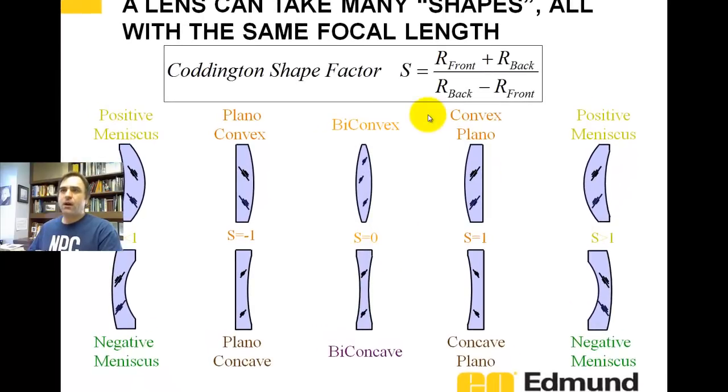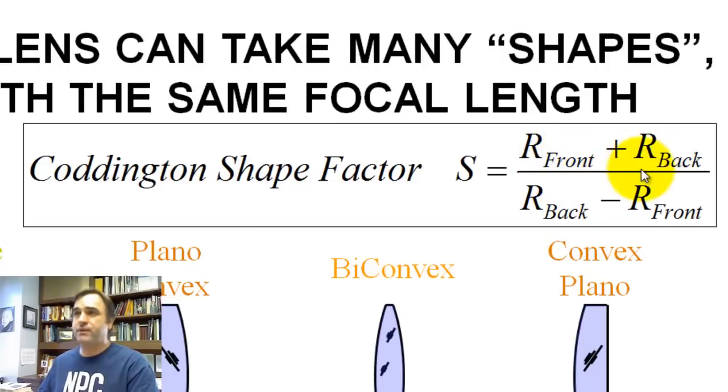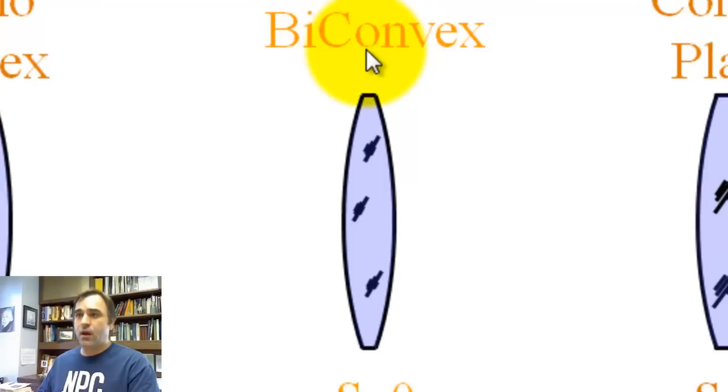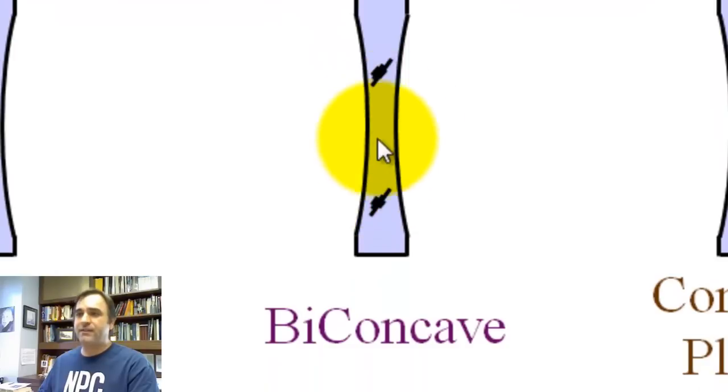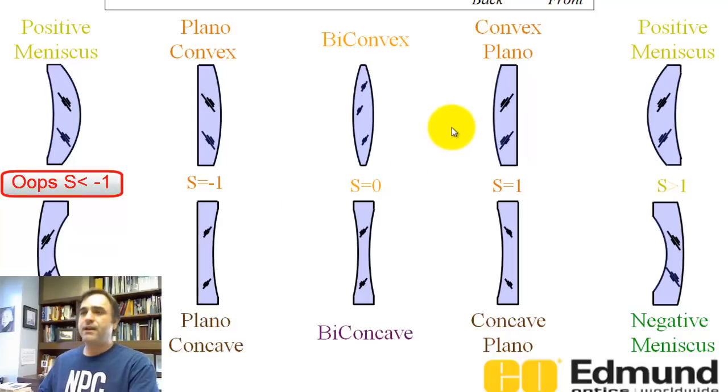So here's bending, also called Coddington shape factor. So the shape factor is the sum of the radii divided by the difference. And notice the difference, you put the back radius minus the front radius. So for lenses that have an equal radius to the front and back, here's a bi-convex positive lens. This is a bi-concave negative lens. Your shape factor is zero. As you increase, you're essentially bending. You go from bi to a convex plano or a concave plano out to a meniscus. And you can go positive meniscus or out here to a negative meniscus. How these are bent plays greatly into how aberrations are balanced. So I want to lay the foundation for understanding lens focal length and shape factor.